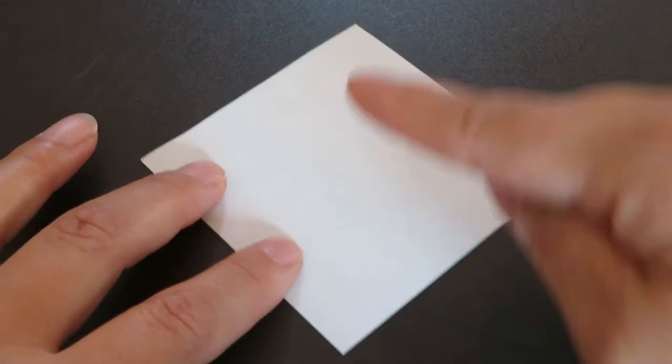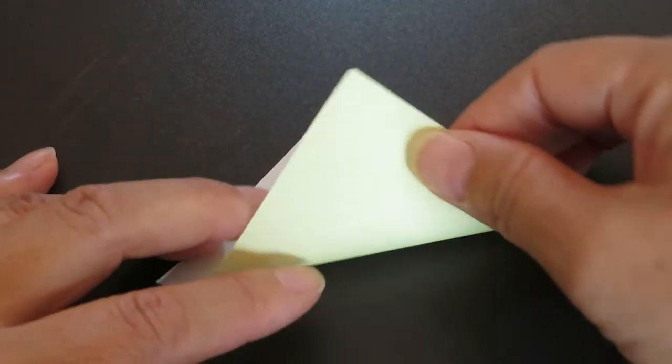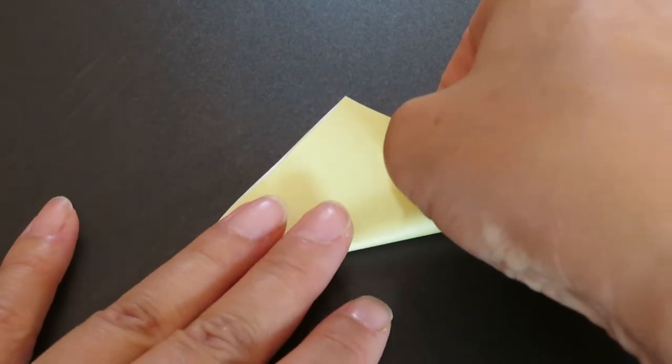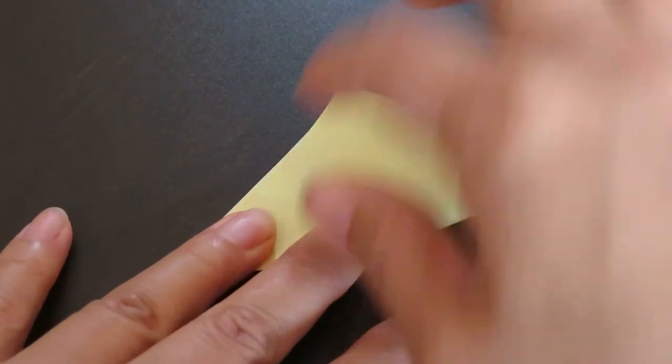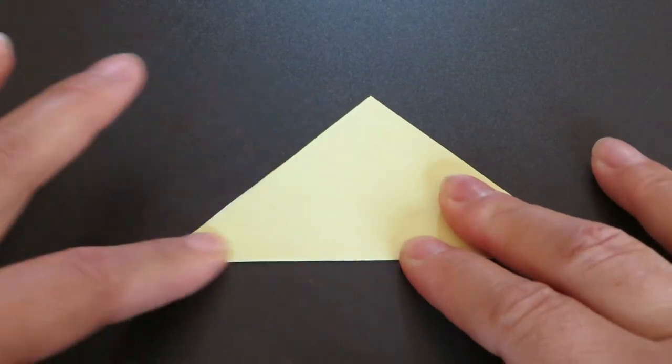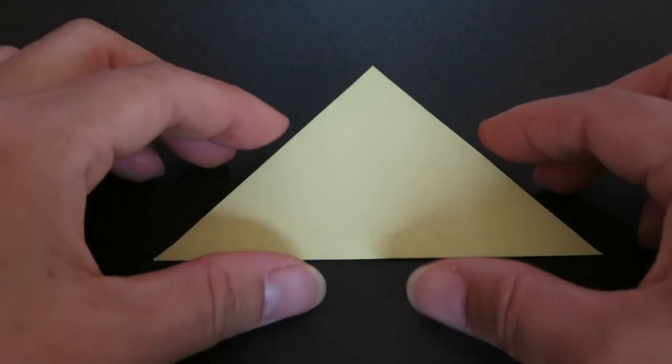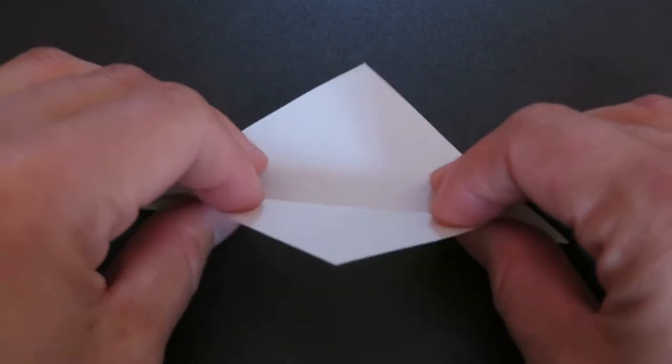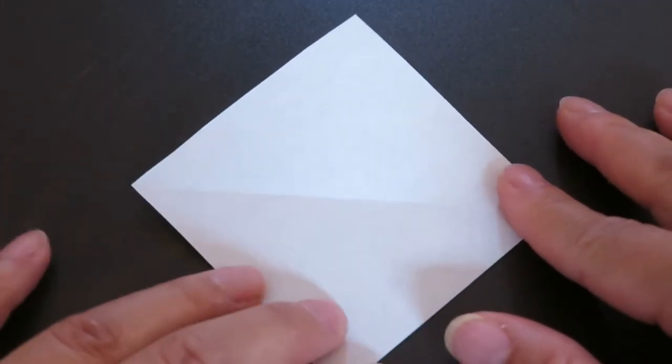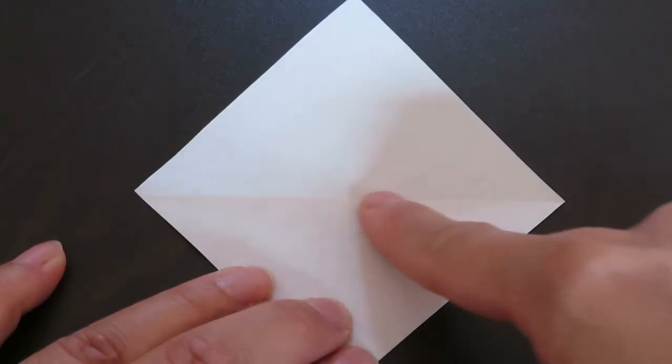Match this bottom corner with top corner by folding a triangle. And open it up. You can see this horizontal crease now.